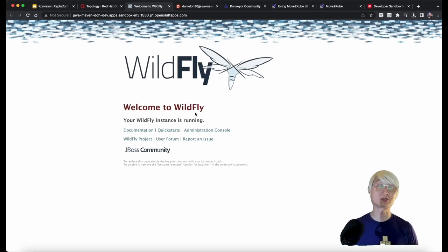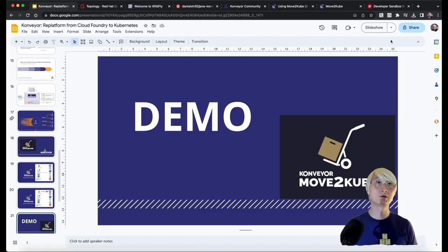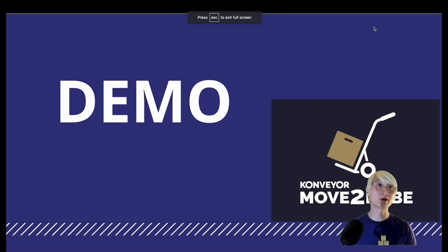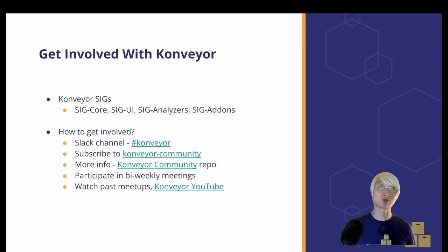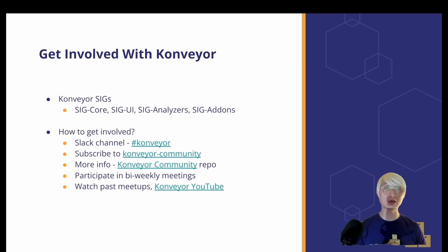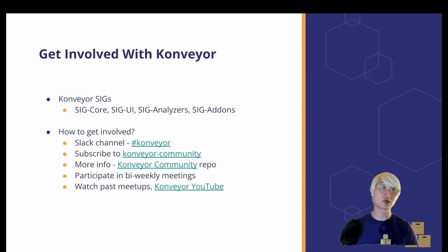We re-platformed an existing Java application that was running on JBoss. That's the demo of how it works. If you are interested in getting more involved in the Konveyor project, we currently have four to six working groups — Core, UI, Analyzer, and Add-ons. We're more than happy to have you. Here is the Slack channel and how to subscribe to the Konveyor community for more information.